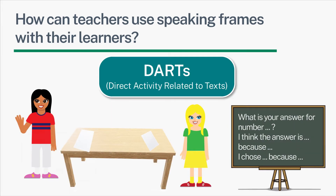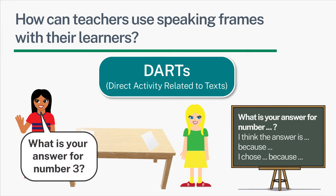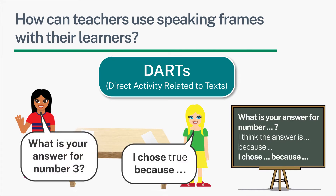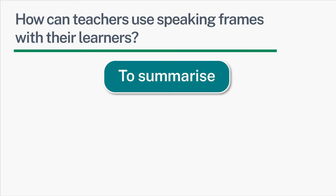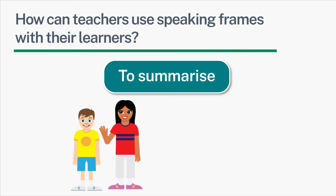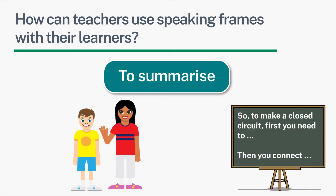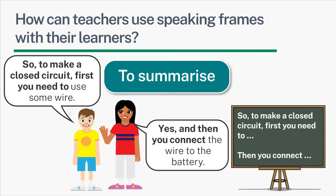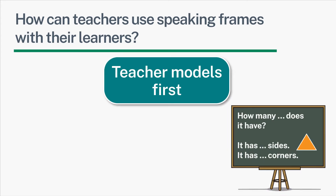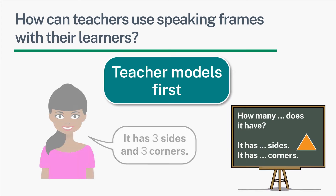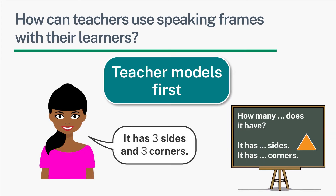Each learner has missing information and they need to ask the other learner questions to find it out. Learners could use speaking frames to discuss their answers to a DART, which is a directed activity related to a text, or to summarise what they've just found out, for example in a science experiment. In all cases, speaking frames work most effectively when teachers model the speaking frame and the activity first.